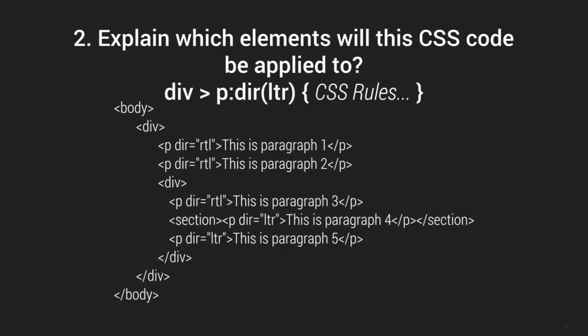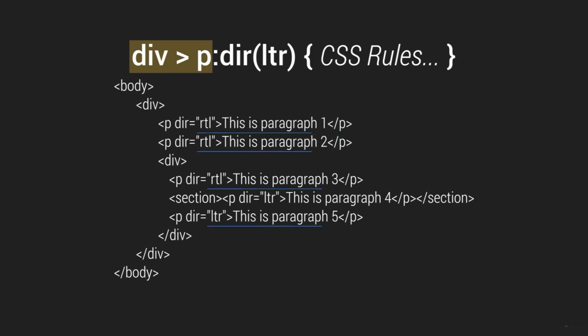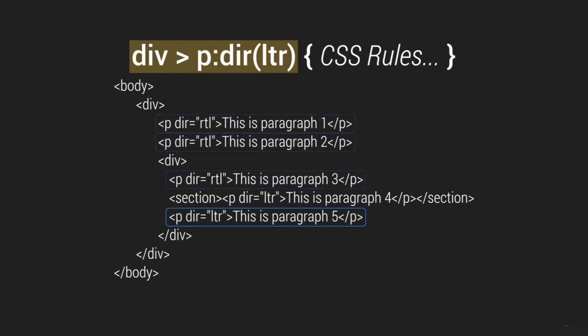The second question: explain which elements this CSS code will be applied to. The 'div > p' selects the paragraph that is a direct child of the div tag — the greater-than sign is for the child selector. Then ':dir(ltr)' selects the paragraph assigned with left direction. So 'div > p:dir(ltr)' will select the fifth paragraph in the document.